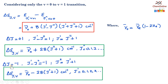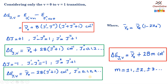Similarly, if delta j equals minus 1, then j' minus j'' equals minus 1, or j'' equals j' plus 1. Therefore, delta epsilon can be written as ν̃_0 minus 2B(j' + 1) centimeter inverse, where j' equals 0, 1, 2, 3, etc. Combining these two, we can write delta epsilon(j,v) equals ν̃_0 plus 2Bm centimeter inverse, where m equals either j' plus 1 or j'' plus 1, with values plus or minus 1, plus or minus 2, plus or minus 3, etc.